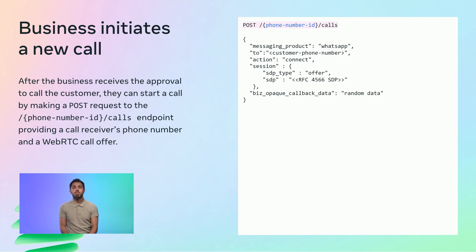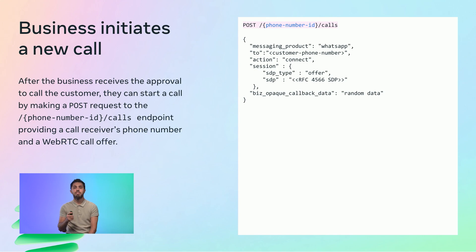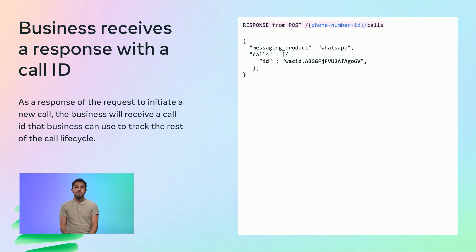After the business receives approval to call the user, it can start a call by making a POST request to the slash phone_number_id slash calls endpoint, setting the action parameter to connect, providing the user's phone number in the to parameter, and a WebRTC call offer in the session parameter. The SDP type must be set to offer and the SDP parameter must follow RFC 4566. The business will then receive a call_id as a response, which must be stored for subsequent API calls.